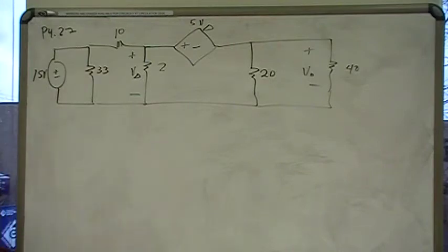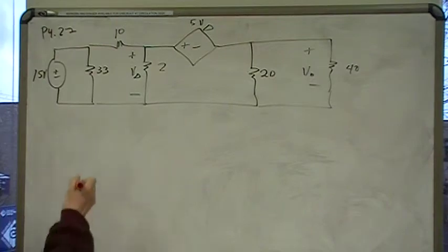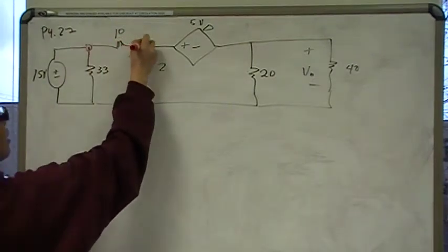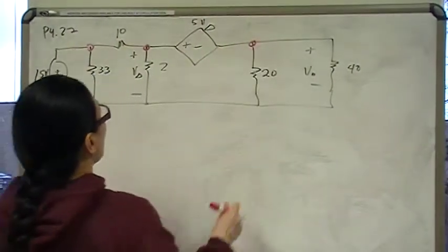What is a node? A node is basically where circuit elements meet. So we have a node here, we have a node here, and we have a node here. We have three nodes.